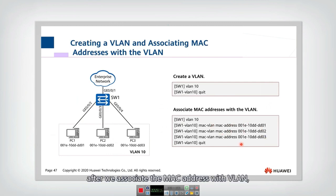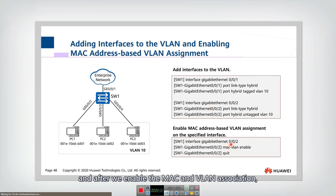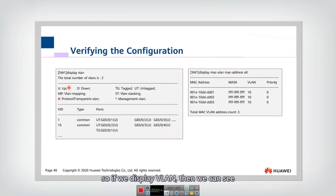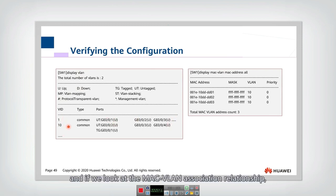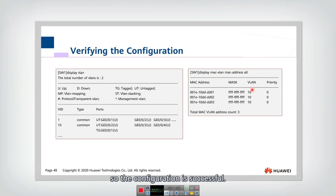After these three steps — associating MAC addresses with the VLAN, setting the interface link types, and enabling MAC-VLAN association — the MAC address-based VLAN assignment is successfully configured. We can verify by using 'display VLAN' to see VLAN 1 and VLAN 10 with their associated interfaces. Using the MAC-VLAN display command, we can confirm that three MAC addresses are associated with VLAN 10. The configuration is successful.